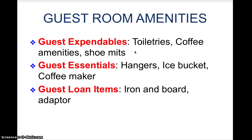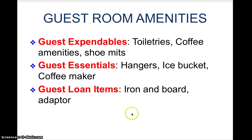The guest essentials are items provided in the room which guests can use during their stay but cannot take back, such as hangers, ice bucket, coffee maker, and ashtrays. The guest loan items — such as iron and board adapters — are not available in the room by default but shall be provided upon request.